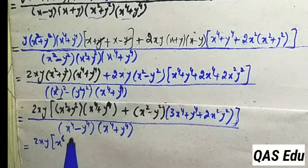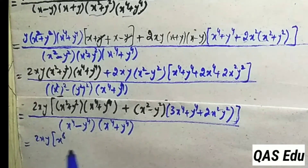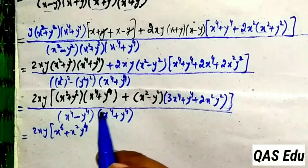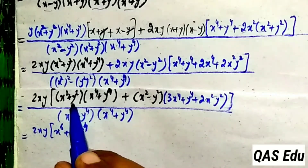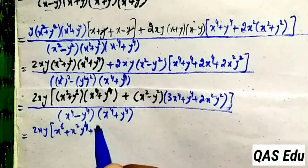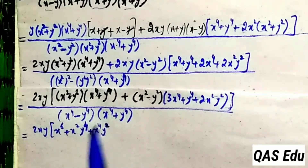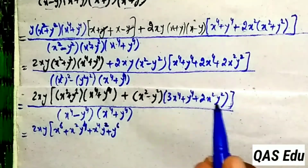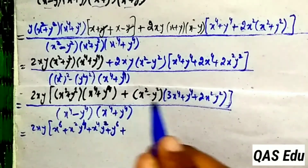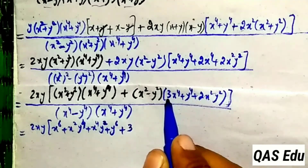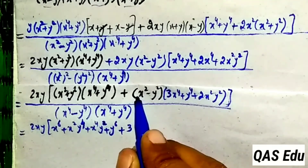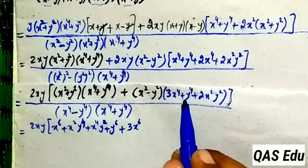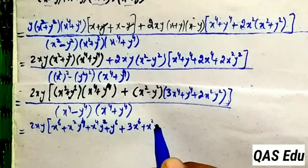x² multiply x⁴ gives x⁶ plus y². Then y⁶: x² multiply y⁴ gives x²y⁴. y² multiply x⁴ gives x⁴y². y² multiply y⁴ gives y⁶. This multiplication: x² multiply (x⁴+y⁴) for three terms. x² multiply x⁴ gives 3x⁴. Then x² multiply y⁴ gives x²y⁴.